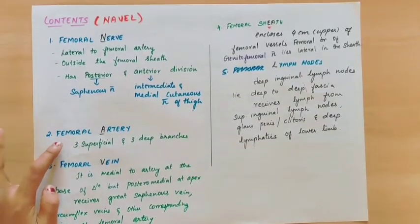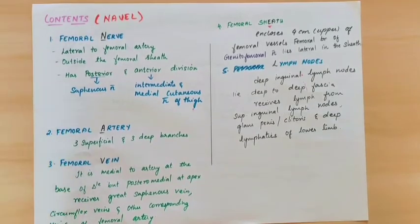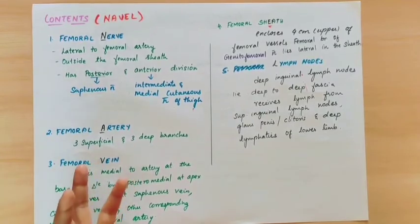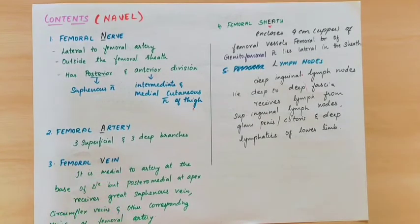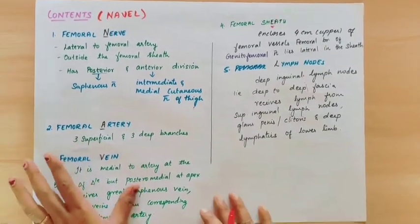Coming to the second content, the femoral artery. The femoral artery gives three superficial and three deep branches. The three superficial branches include the superficial epigastric artery, superficial pudendal artery, and superficial circumflex iliac artery. Deep branches include the profunda femoris artery and deep pudendal artery.